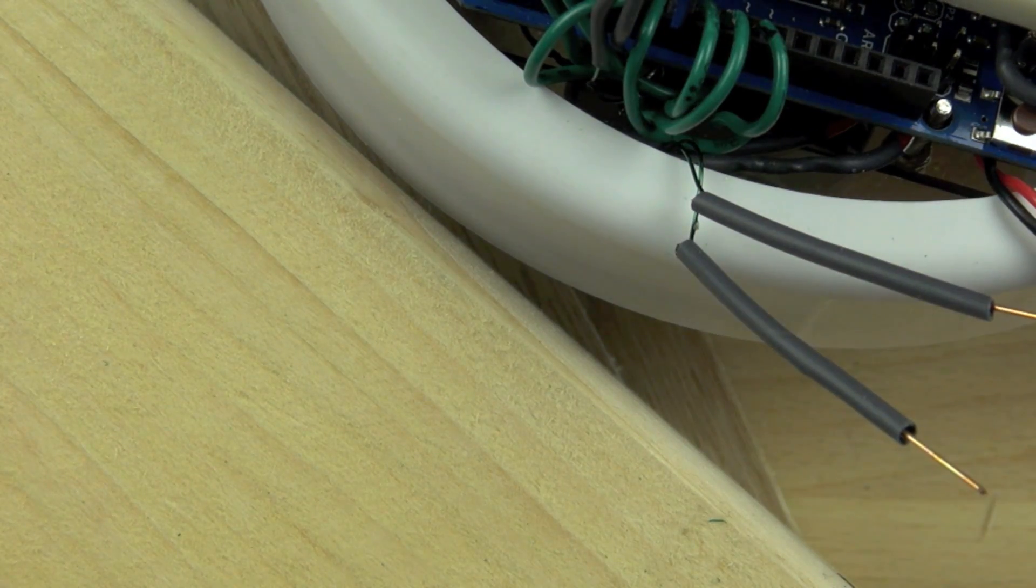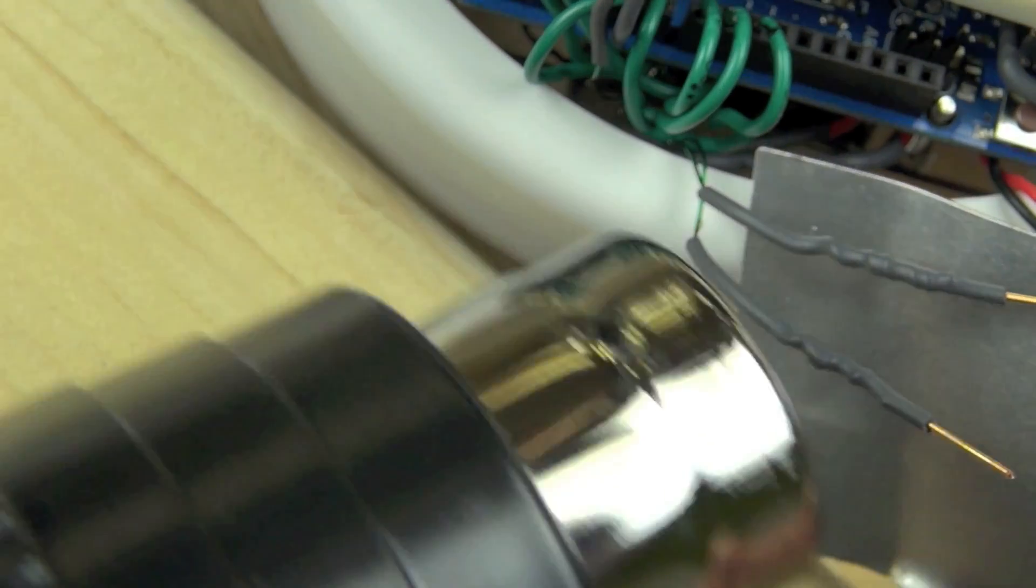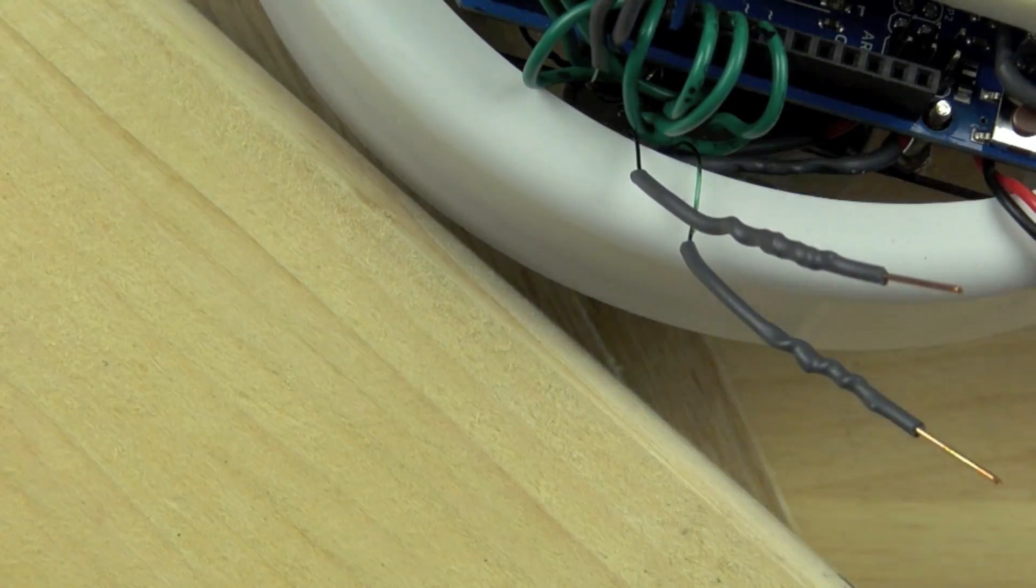We'll use our heat gun to cause that tubing to shrink in place and protect those new connections.